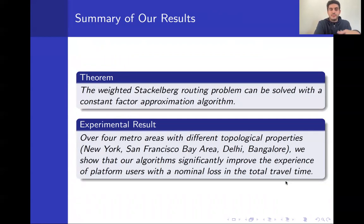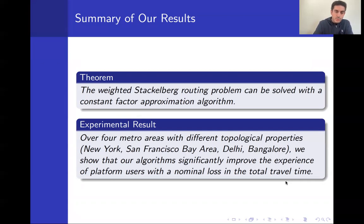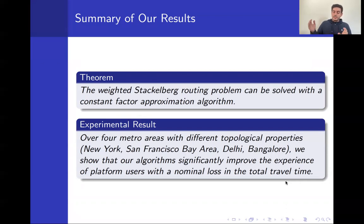Here is a summary of our results. Analytically, we show that the weighted Stackelberg routing problem can be solved within a constant factor approximation algorithm. On the experimental side, we focus on four real metro areas with different topological properties — New York, San Francisco Bay Area, Delhi, and Bangalore — and show that our algorithms significantly improve the experience of platform users with very small loss in total travel time compared to original Stackelberg algorithms.